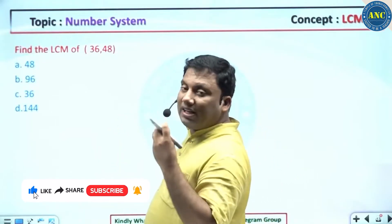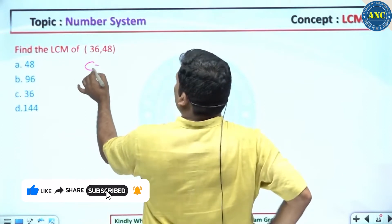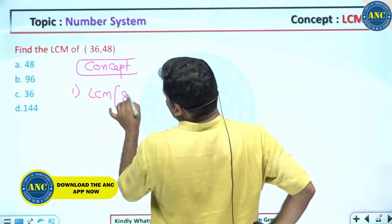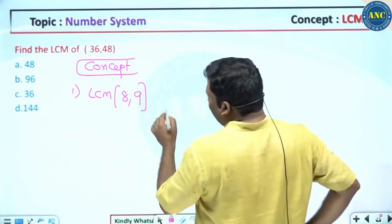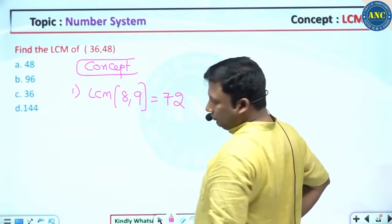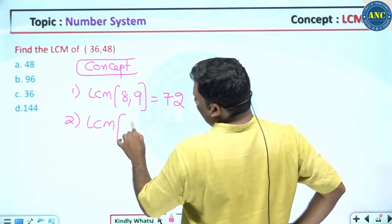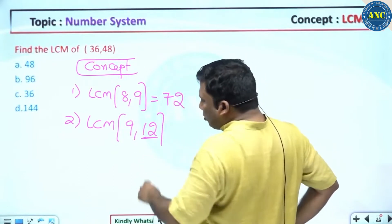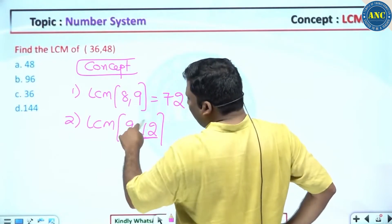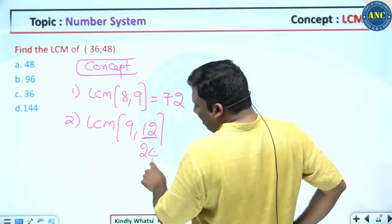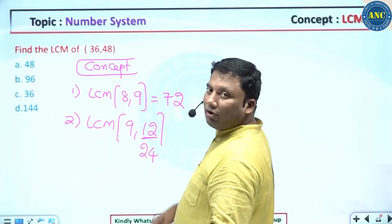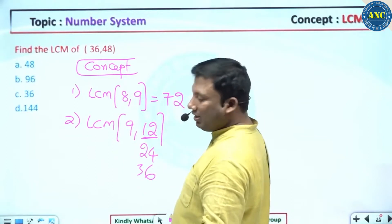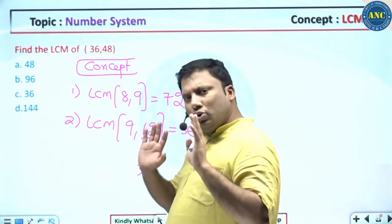Find the LCM of 36 and 48. Listen carefully — concept. For consecutive numbers like 8 and 9, LCM is their product: 8 × 9 = 72. For LCM of 9 and 12, go to the largest number and check if it is divisible by the other. 12 is not divisible by 9. Take the next multiple: 24 is not a multiple of 9. Take 36 — is 36 a multiple of 9? Yes. Answer is 36. This is how you find the LCM.